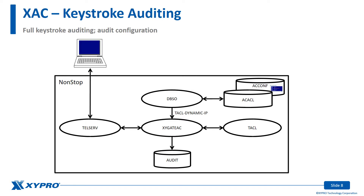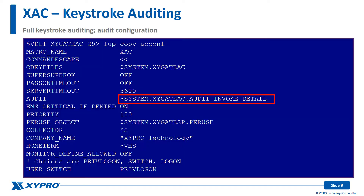Auditing is configured in the AC comp file. This example shows the default XAC audit configuration. Invoke causes the audit to include how the session was started, from what user, on which terminal, at what time, and with what startup command. Detail causes the audit to include the commands that were performed by the user in the XAC session.